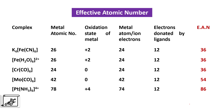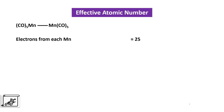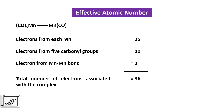Let's understand how to calculate the effective atomic number for dinuclear complexes, using the example of Mn2(CO)10. The electrons from each manganese is 25. There are 5 carbonyl groups associated with each manganese, contributing 10 electrons. In addition, there is one metal-to-metal bond — the Mn–Mn bond — contributing 1 electron. The total number of electrons becomes 36, which means this complex also follows the effective atomic number rule.